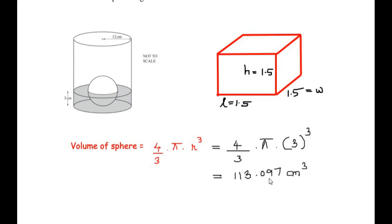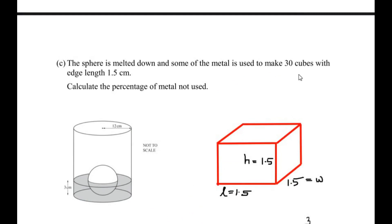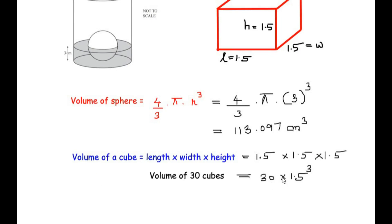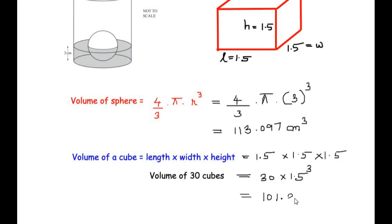We take up to three decimal places for maximum accuracy. The volume of one cube is length × width × height = 1.5 × 1.5 × 1.5 = 1.5³. Since 30 cubes are made, the total volume of 30 cubes is 30 × 1.5³, which equals 405/4 or 101.25 cm³.